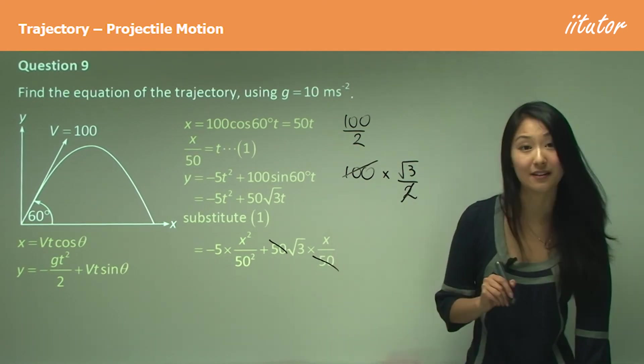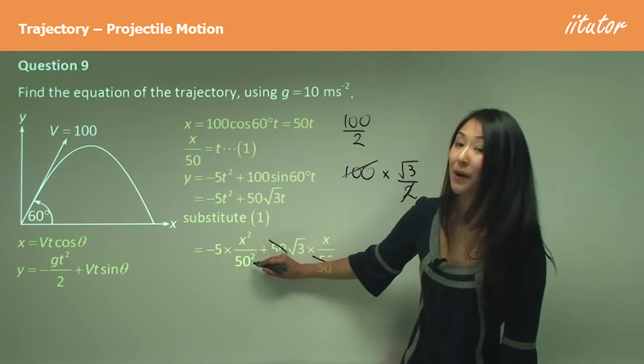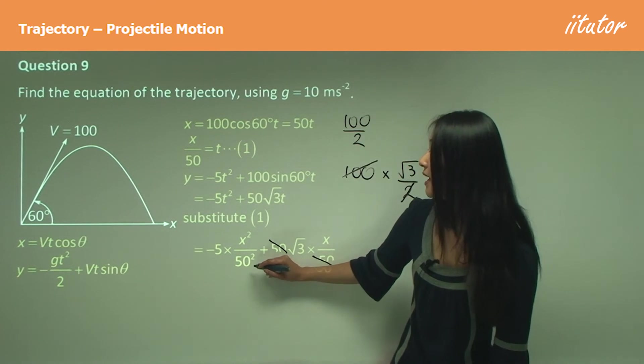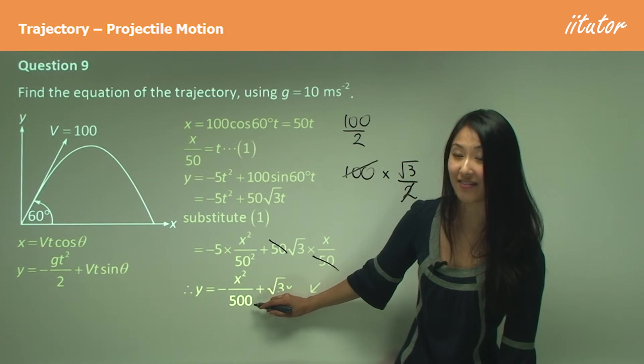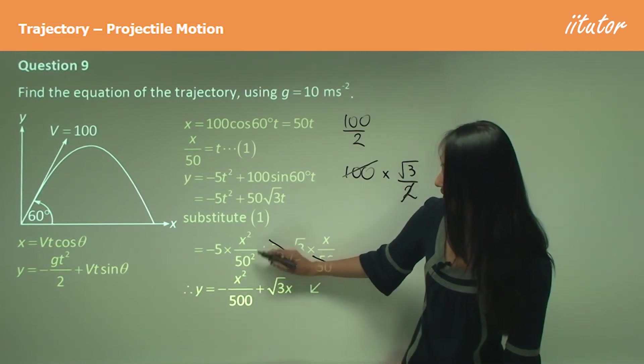Here we have 50 squared, so it's 2500, and that's going to cancel with that 5 to give you 500 as the denominator there. So that's why we get negative x squared over 500 plus square root 3x as the equation of the trajectory for this specific trajectory there.